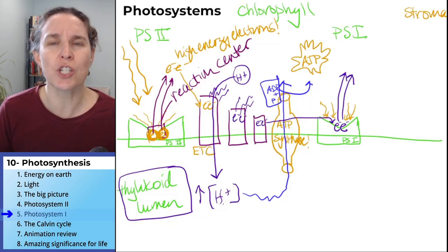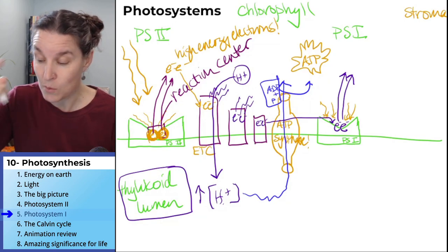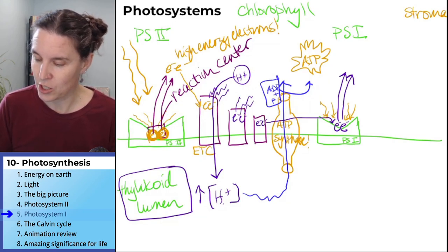And with the light of the sun, photosystem one creates high energy electrons.